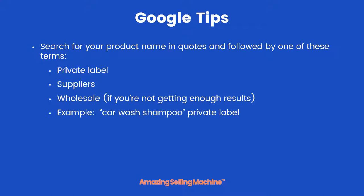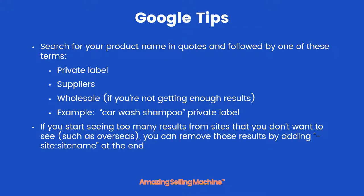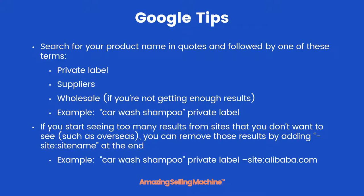Here's an example: if you're looking for car wash shampoo, you'd put that in quotes to make sure you're only finding that specific product, then put the words 'private label' after it. That would pull up companies willing to private label car wash shampoo. Now if you start seeing results from sites you don't want — like Alibaba or Amazon — you can remove them by adding a negative sign, then 'site:', then the site name. For example, adding '-site:alibaba.com' excludes all results from Alibaba.